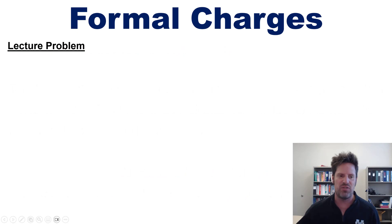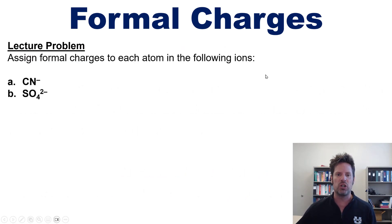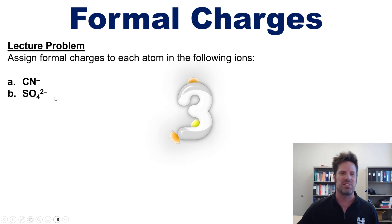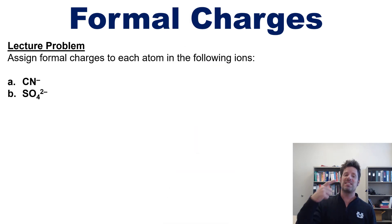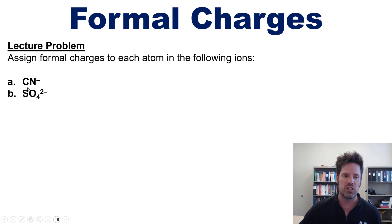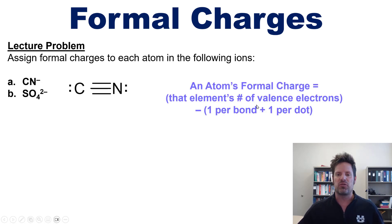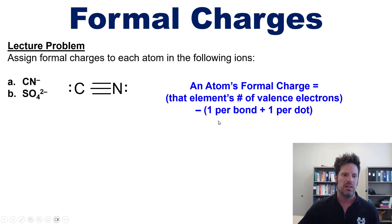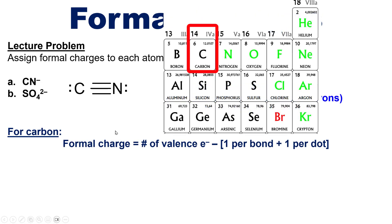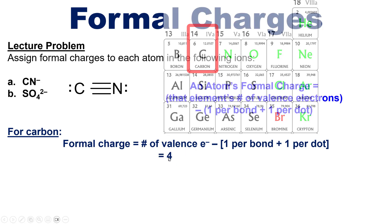Let's address this by looking at some example problems. I want you to assign formal charges to each of the following ions. We begin by drawing the Lewis structure of cyanide, CN⁻, shown right here. Then we remember that an atom's formal charge equals that element's number of valence electrons minus one per dot plus one per bond. Let's begin by figuring out the formal charge of carbon. Carbon is in column 4A, which means it has four valence electrons, so I put the number four in for its number of valence electrons.